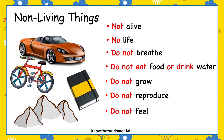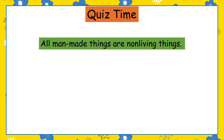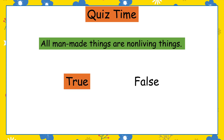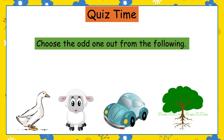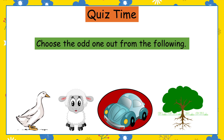So let's start! All man-made things are non-living things — is it true or false? True. Choose the odd one out from the following: duck, lamb, car, tree. It's car, because it is non-living.